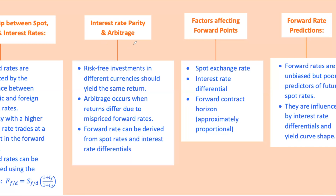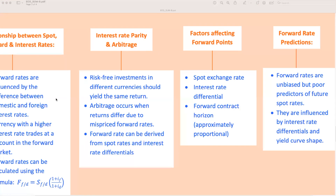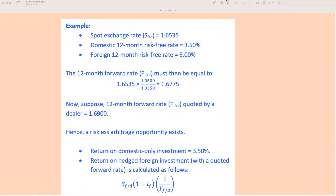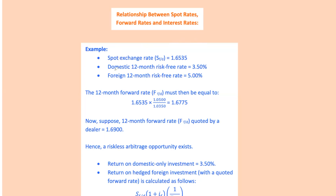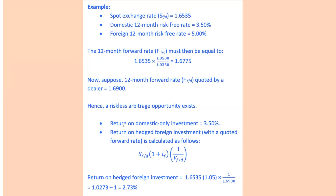If the foreign interest rates are higher than domestic rates, the forward rate will be higher than the spot rate, and the currency with the higher interest rate will trade at a discount in the forward market. For example, with a spot rate of 1.6535, a domestic 12-month risk-free rate of 3.5%, and a foreign 12-month risk-free rate of 5%, the 12-month forward rate would be 1.6775. If a dealer quotes a forward rate of 1.69, a riskless arbitrage opportunity exists. You could borrow at the foreign risk-free rate, sell the foreign currency at the spot rate, hedge at the forward rate, and invest at the domestic rate, earning a profit.